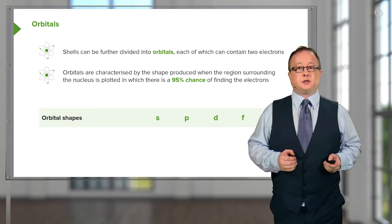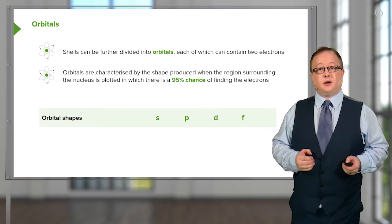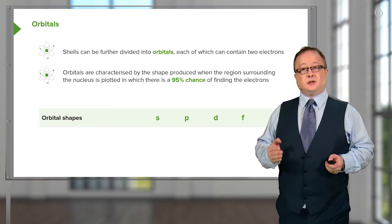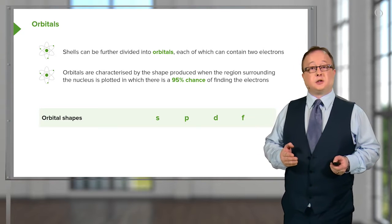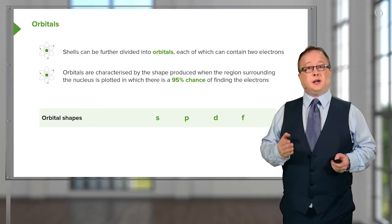The orbital shapes that we will come across are S, P, D and F. We're mostly going to focus on S, P and D orbitals.